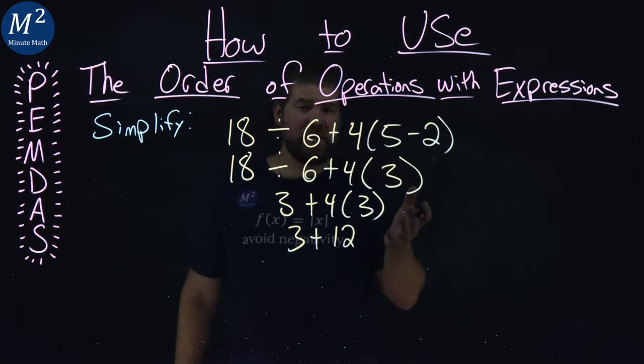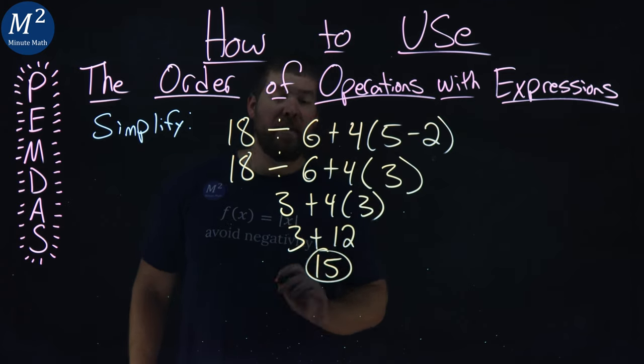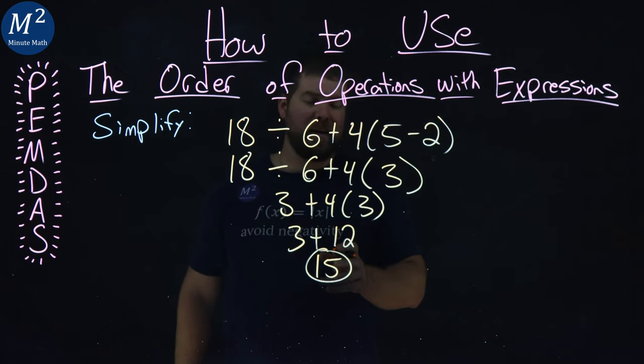From here, we have one operation left, which is pretty easy to do. 3 plus 12 is a 15. And there we have it. We've simplified our expression using PEMDAS, and we got a 15.